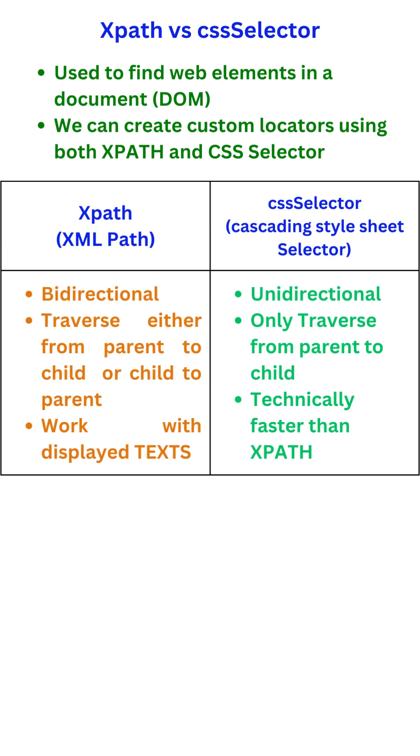CSS selector is unidirectional — we can only traverse from parent to child. Technically, it is faster than XPath.